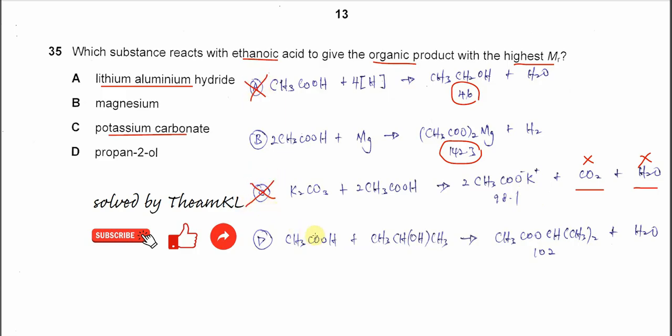How about D? D is when ethanoic acid reacts with this propan-2-ol, it will produce ester. This ester and water. So this ester only 102. You can count the numbers if you want.